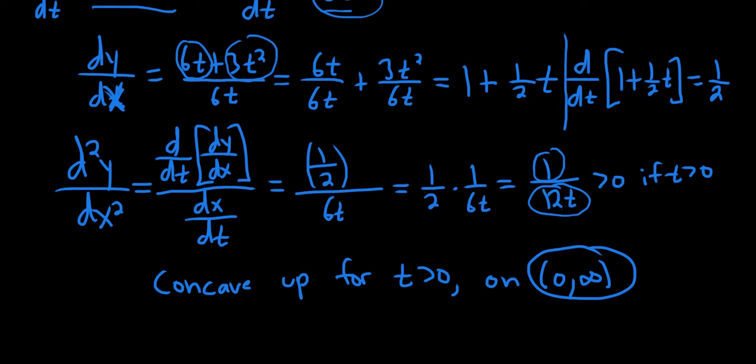If t is negative, you're going to get 1 over a negative number. So the whole thing is negative. So it will be concave down for t less than 0, so on negative infinity 0.